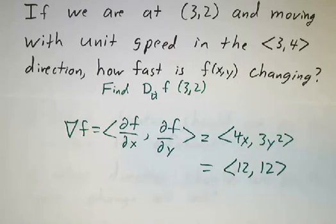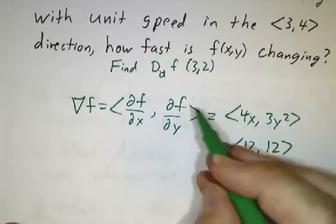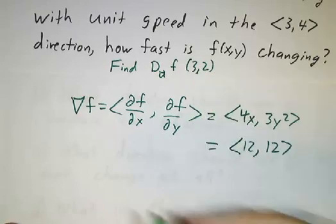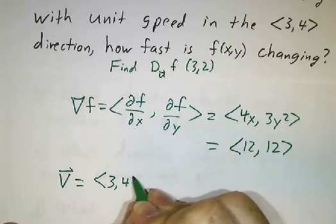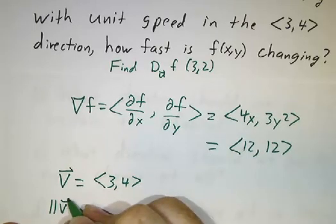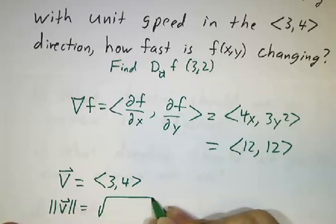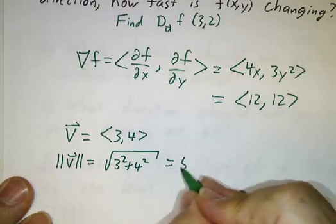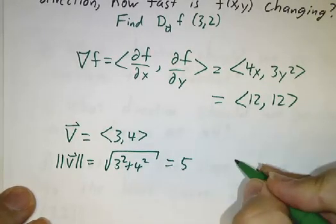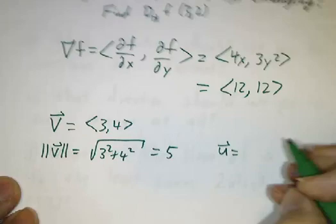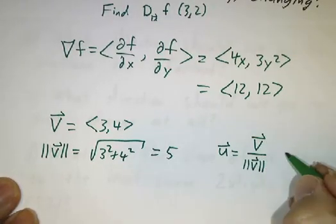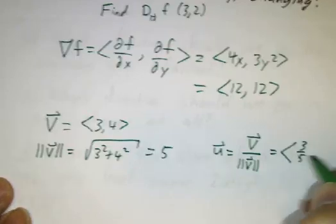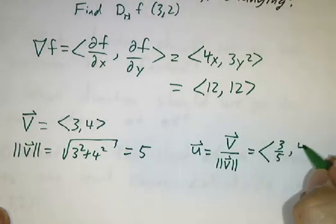Convenient! The next thing is to figure out the unit vector in the (3, 4) direction. Our vector v was (3, 4). The length of v is the square root of 3² + 4², which is 5. So our unit vector is v divided by the length of v, which is (3/5, 4/5).